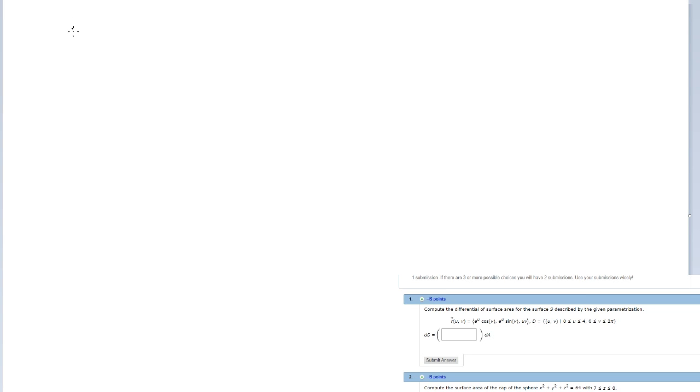The only thing we need to know here is that dS is equal to the magnitude of r with respect to u cross r with respect to v dA. If we look at our problem, we already have the dA written for us, so all we have to do is take the partials and then take the cross product and then the magnitude.